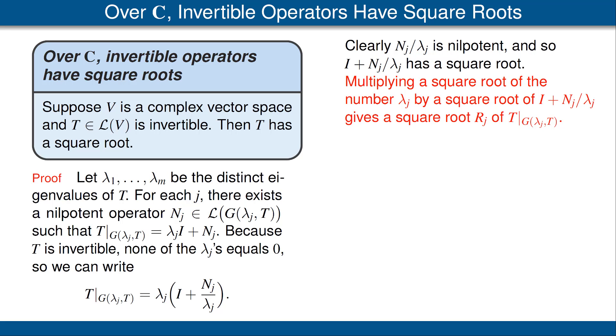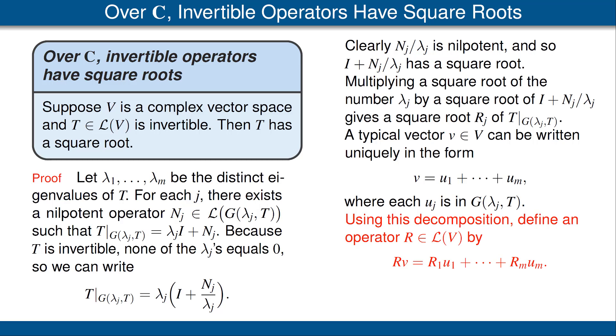Now, the idea for the rest of the proof is just put those operators Rⱼ together. Here's the specifics of that. The typical vector in V can be uniquely written in the form shown here, where each vector uⱼ is a generalized eigenvector corresponding to the eigenvalue λⱼ. That's from our decomposition theorem.